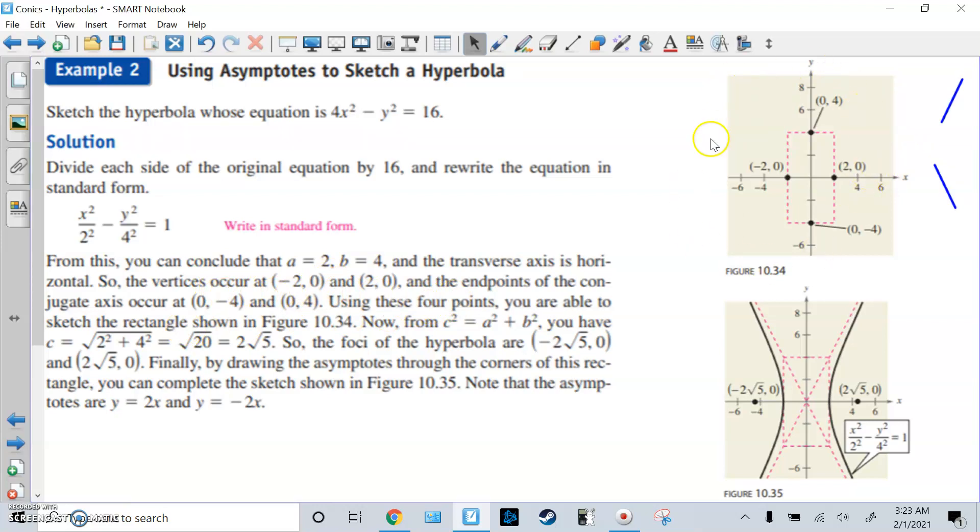Use those 4 points. Sketch that rectangle in this top picture. Find C. C squared equals A squared plus B squared. We know what a squared and b squared is. We get 2 root 5. And if you want the foci, it's the center plus or minus this thing. Since it's horizontal, we're going to subtract and add it to the x. So this is 0 minus 2 root 5, which is negative 2 root 5, and then 0 plus 2 root 5, which is 2 root 5. And then by drawing the asymptotes through the corners of the rectangle, you can complete the sketch. The asymptotes are y equals positive 2x and y equals negative 2x.